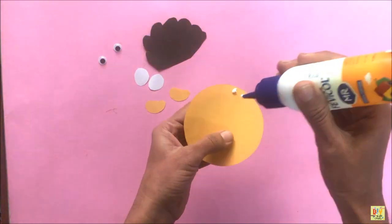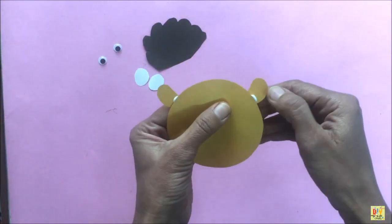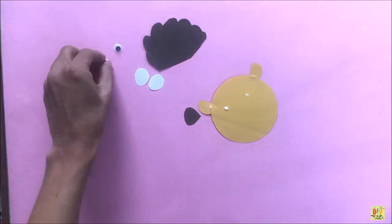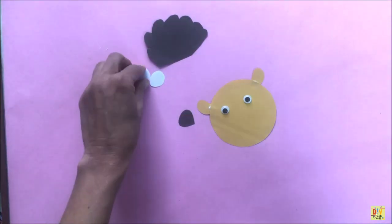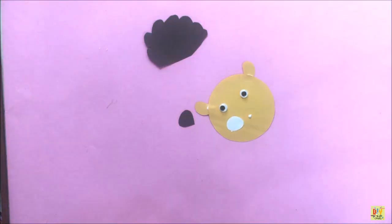Lastly, place everything on the paper that we cut, just like in the video. Place our googly eyes, the whiskers, and then the nose.